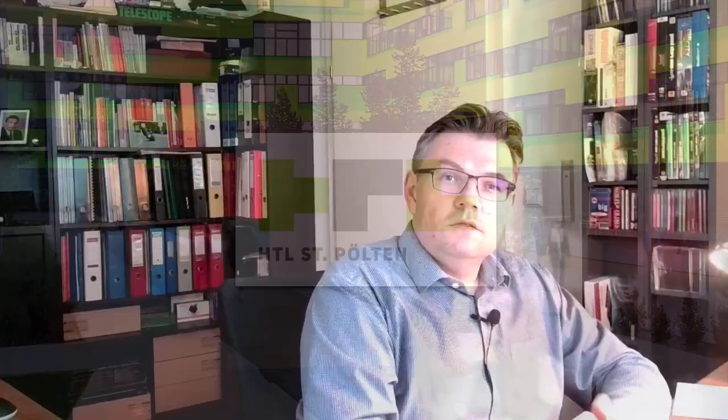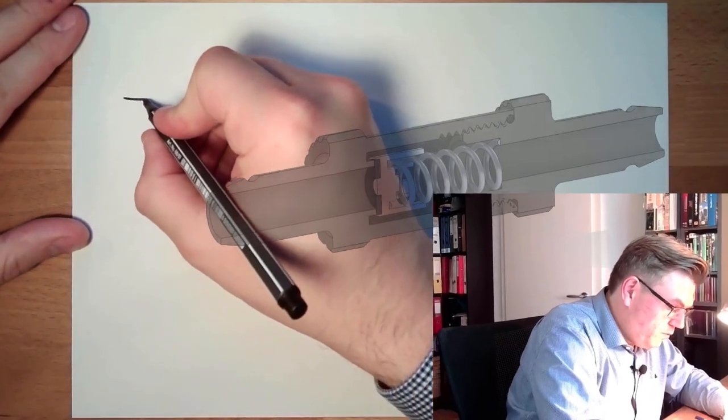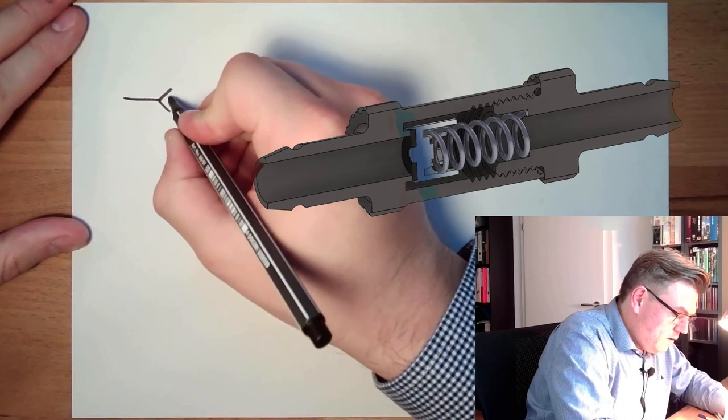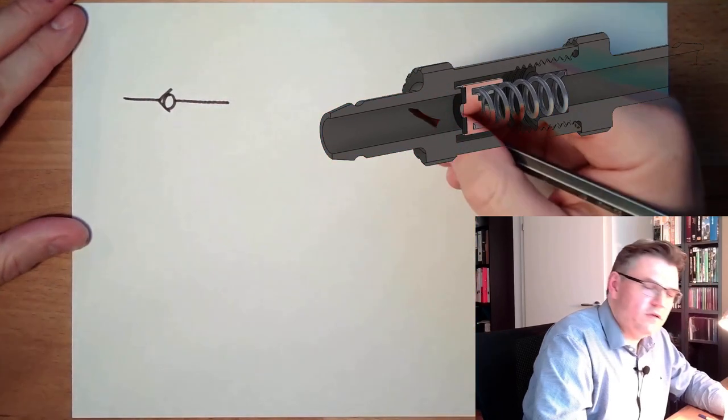So these are the two drawings. Now let's come again to the symbols of those two things. What are the symbols of a non-return valve and a quick exhaust valve? Let's stick to the non-return valve. So the symbol of the non-return valve is looking like this.